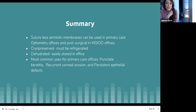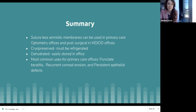In summary, sutureless amniotic membranes can be used in primary care optometry as well as post-surgical offices. The two types are cryopreserved — which must be refrigerated — and dehydrated — which can be stored at room temperature in the office. Common uses include punctate keratitis, recurrent corneal erosion, and persistent epithelial defects.